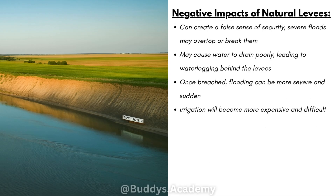However, just as there are positive impacts, there are also negative impacts to your natural levees. Natural levees can create a false sense of security, as severe floods may overtop or break them. They may cause water to drain poorly, leading to waterlogging behind your levees. Tributaries which would normally flow towards the mainstream will not be able to join because the natural levees are blocking them — so these streams will now have to flow parallel to the river. Once natural levees are breached, flooding is going to be much more severe and sudden.